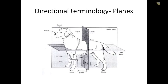In the transverse plane, we have lateral, which is toward the outer edges of the animal, and medial, which refers to the midline. I like to think of medial as toward our belly buttons if thinking about people, and lateral is toward our sides. Getting more specific to the feet, we have plantar and palmar.